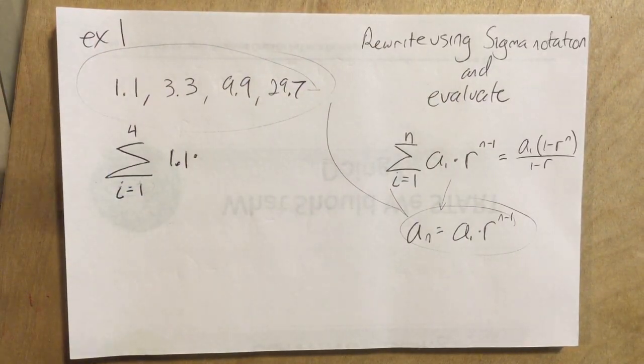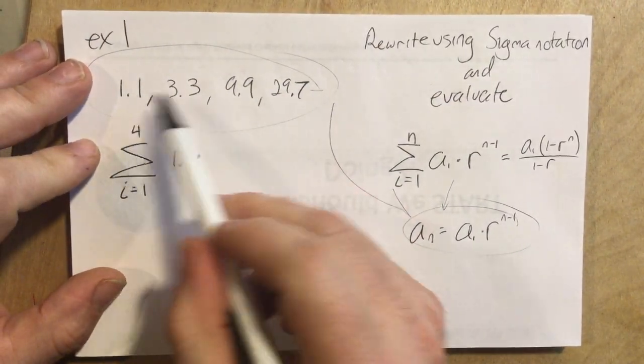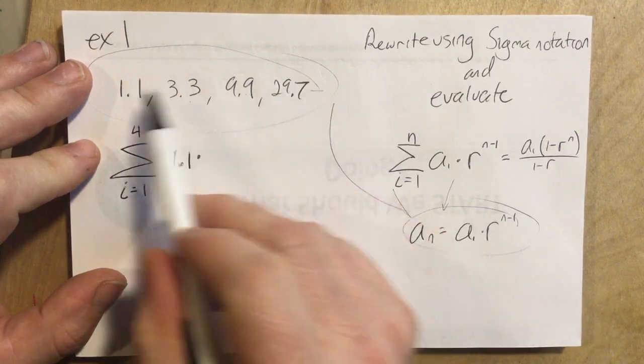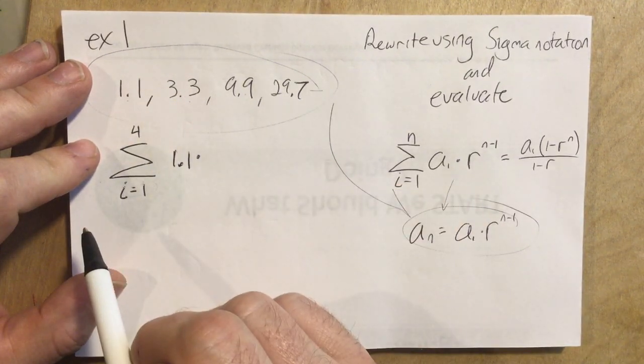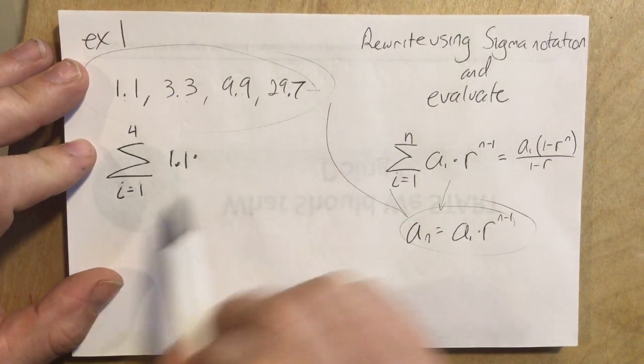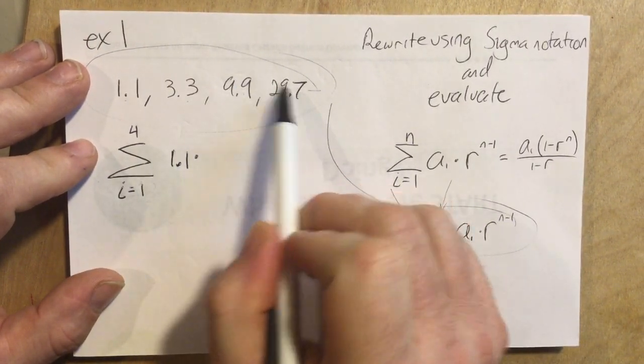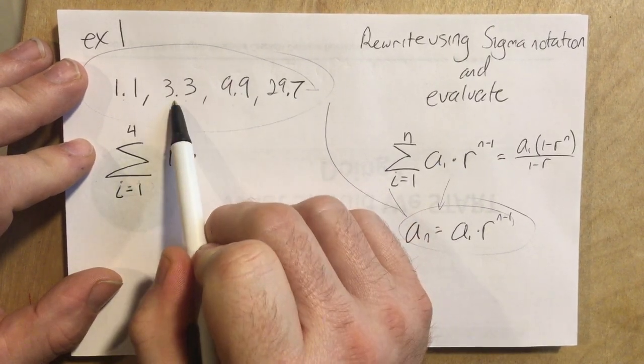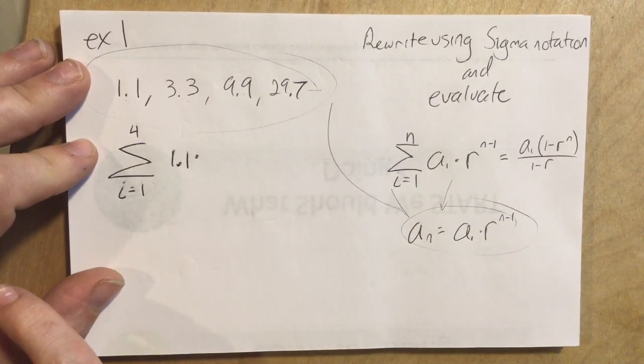Well, what's r? Well, that's not too hard to figure out. r is the number that we multiply each term by to get the next term, right? And if we look at it for a minute, we can verify. We can divide each of these pairs. 29.7 divided by 9.9 gives us 3. 9.9 divided by 3.3 gives us 3. And that division gives us 3 as well.